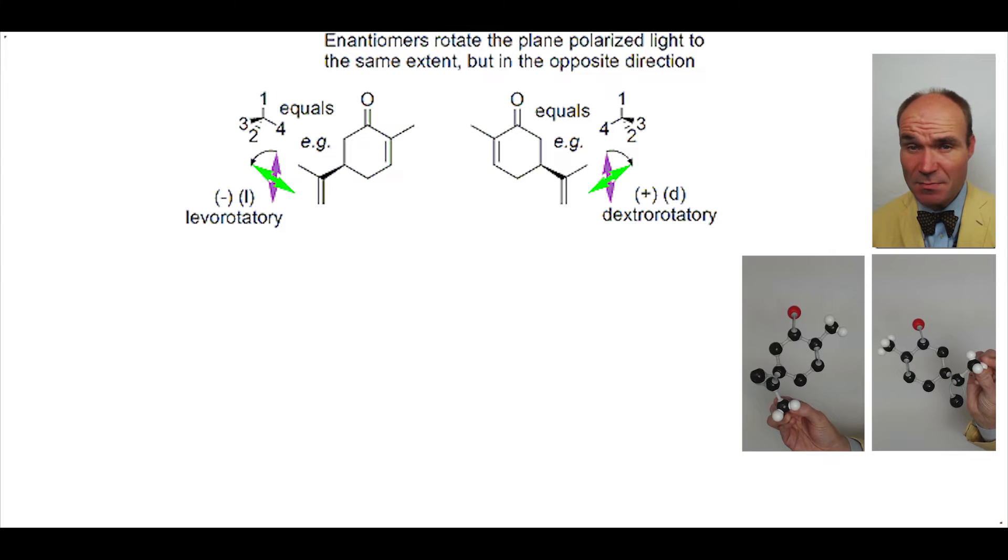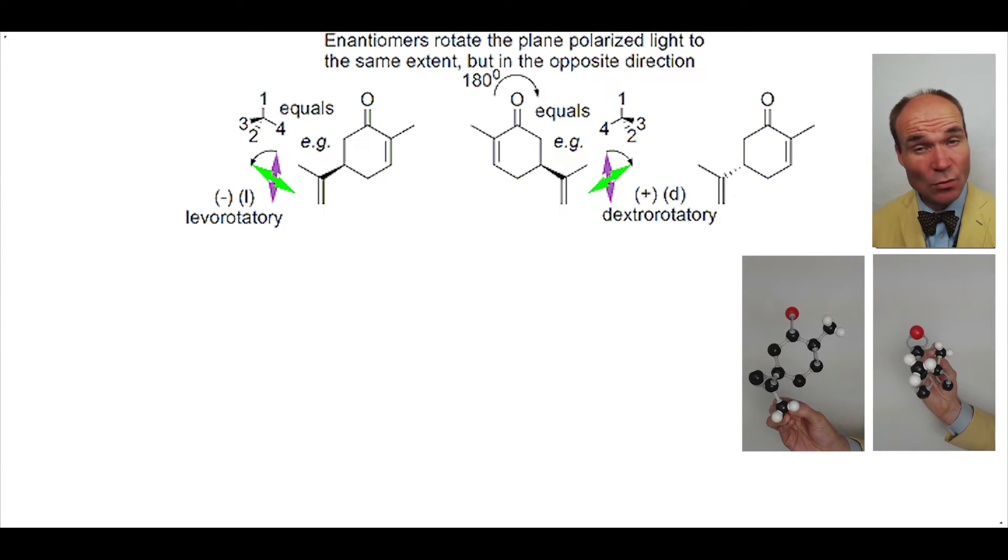Another way to show this plus carvone is to rotate it by 180 degrees. In this position, we can see that the two enantiomers have almost all the atoms in the same location, except for two substituents attached to the stereogenic center. These two include hydrogens that are not depicted here.